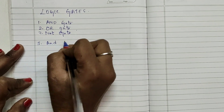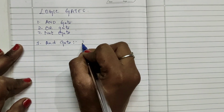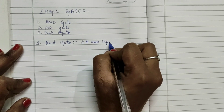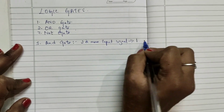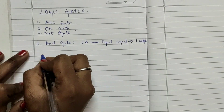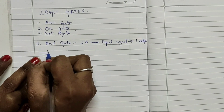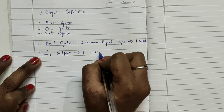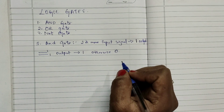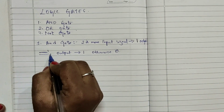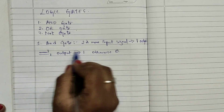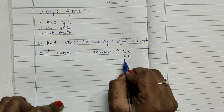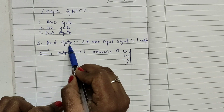AND gate has two or more input signals and it produces one output signal. If all the input signals are one, then the output signal will also be one; otherwise it will be zero. We have covered this in detail in our previous video. Just for a small example, let's look into the truth table: 0·0, 0·1, 1·0, 1·1.